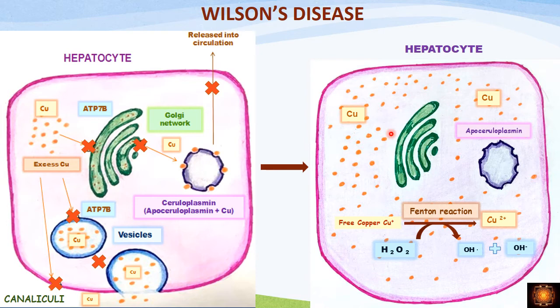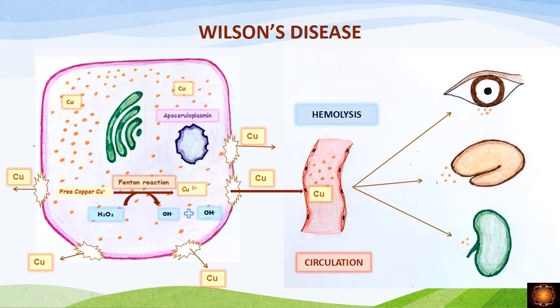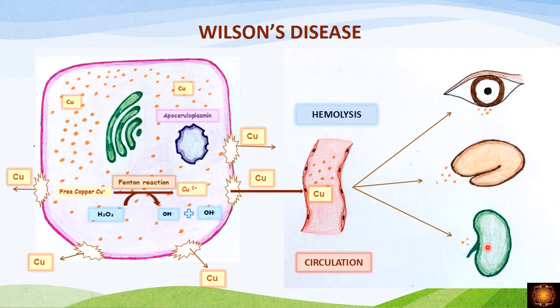Increased copper activates the Fenton reaction — similar to hemochromatosis where iron initiates the Fenton reaction, here copper activates it — causing conversion of hydrogen peroxide to hydroxyl ions, which cause free radical injury. The free radicals damage the hepatocyte membrane, and the copper accumulated in the cytoplasm is released into circulation after cell lysis. Free copper in circulation is toxic to red blood cells causing hemolysis, or it is slowly deposited in different organs including the cornea, brain, kidney, and liver.